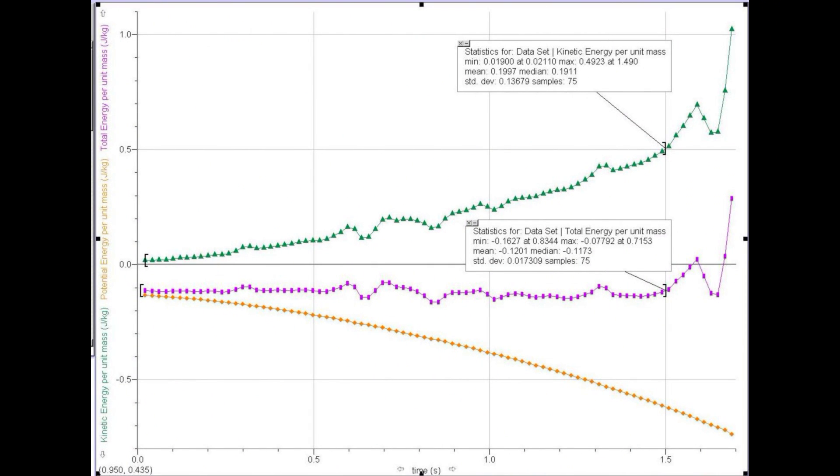Here's a plot of kinetic energy in green, increasing as the object picks up speed down the hill. Potential energy in yellow, dropping as the object loses altitude. And total energy, which ideally remains constant.